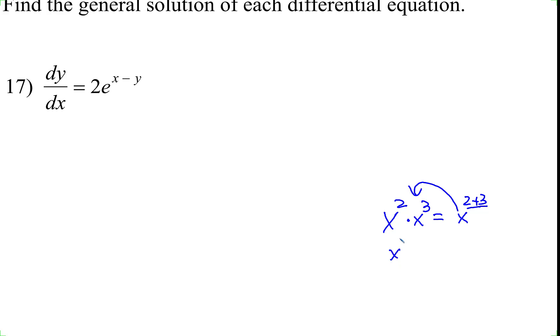Now if you have x to the 7th divided by x to the 4th, that becomes x to the 7 minus 4. So if you have a subtraction in the exponent, you can rewrite it as a division between exponents with the same base. And that's what we have here.